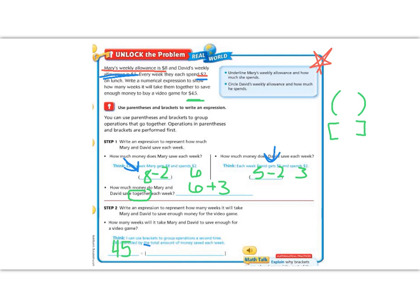So you can see that we have some brackets here. I'm going to make them bigger. But we're going to write our parentheses. So inside here, we have Mary's 8 minus 2 plus David's 5 minus 2. And then we would take that number and divide 45 by that.